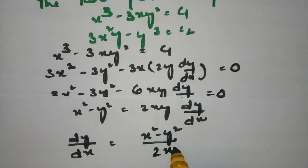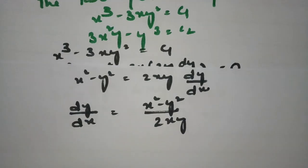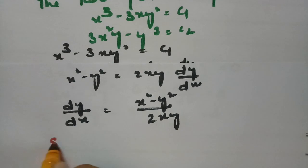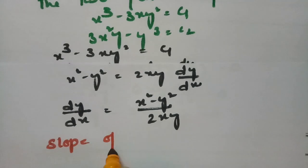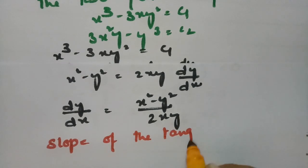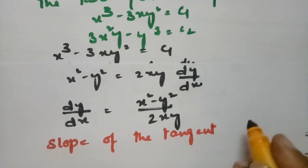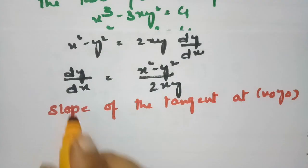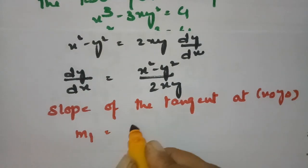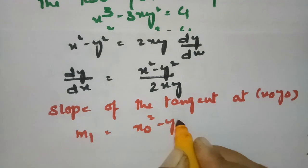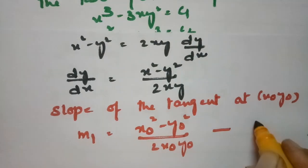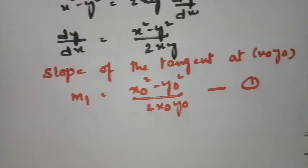Rearranging, dy/dx = (x² - y²) / (2xy). So the slope of the tangent at point (x₀, y₀) for the first family is m1 = (x₀² - y₀²) / (2x₀y₀). This is equation number 1.